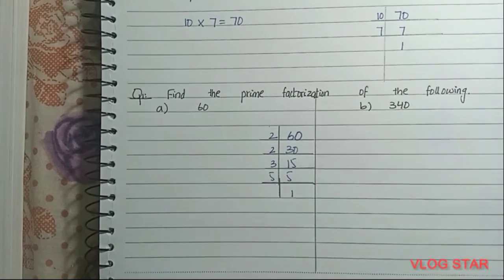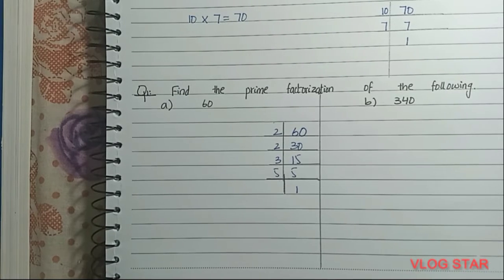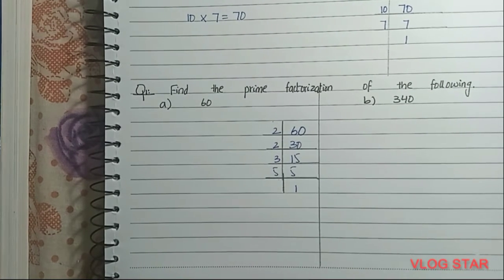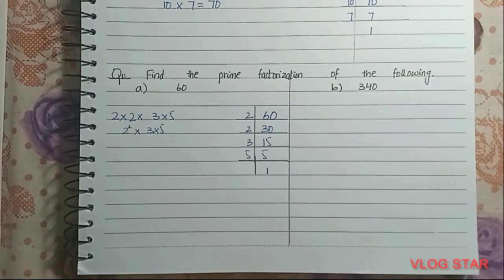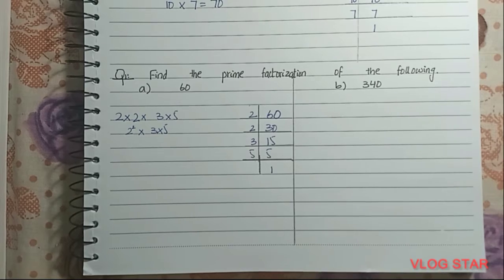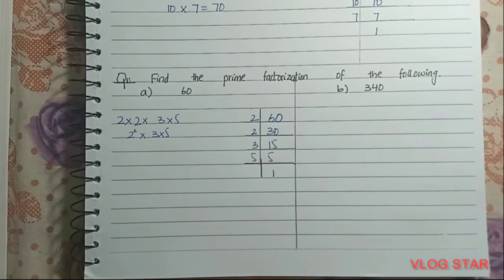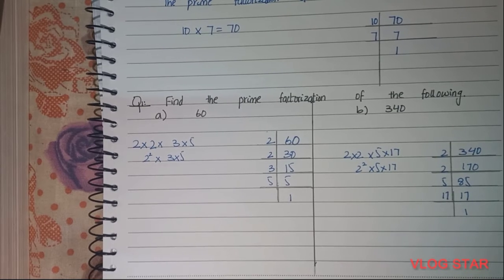So the prime numbers we multiply to get 60 are 2 × 2 × 3 × 5, which makes 60. And you write it in a more simplified form: we get 2² × 3 × 5, and here part a is solved.